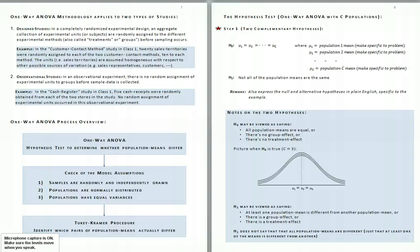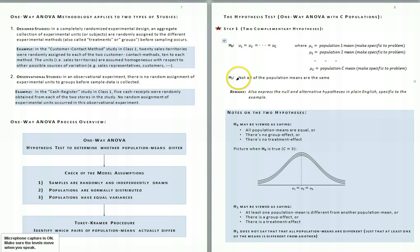For the hypothesis test, the null hypothesis is that all of the population means are equal. The alternative hypothesis is that not all of the population means are equal — that is, at least one pair of population means are different.